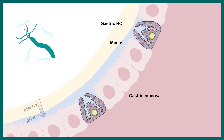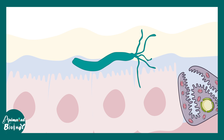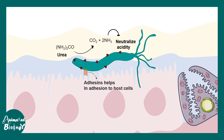H. pylori can change the pH of the stomach because it has an enzyme called urease, which can buffer the excessive acidity. It can increase the pH from below 3 up towards 5.7, meaning gastric acidity decreases. In this environment, H. pylori uses its flagella to propel through the thick mucus and adhere to the epithelial cells of the stomach. One of its prime enzymes is urease, which converts urea into ammonia to neutralize acidity.